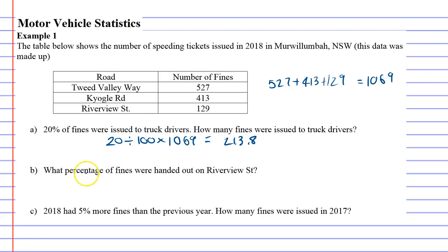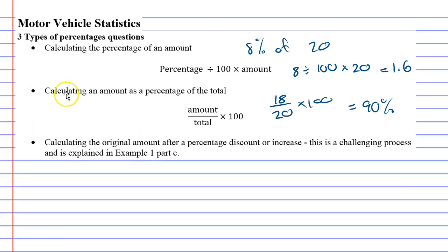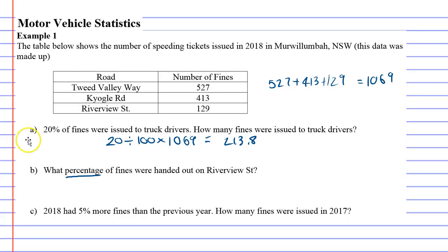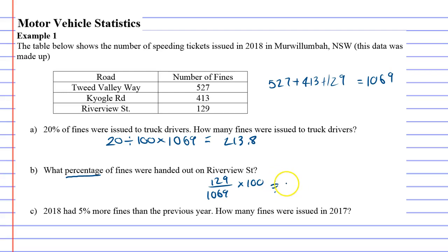Question B says: what percentage of fines were handed out on Riverview Street? Anything with a solution as a percentage uses the second method: amount over total, times 100. The number of fines on Riverview Street is 129, and the total is 1069. So we get 129 ÷ 1069 × 100, which comes out to approximately 12%. So about 12% of the fines were on Riverview Street.